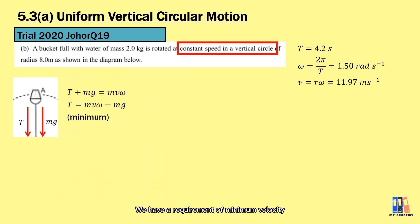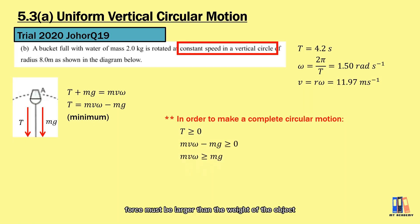There is something to take note. We have a requirement of minimum velocity in order to make a complete circular motion. This is achieved when the tension is still there, which means it is a non-zero value. From the derivation here, the centripetal force must be larger than the weight of the object, where it depends on the velocity of the object.